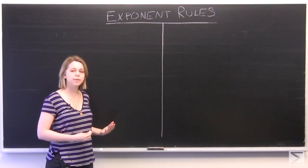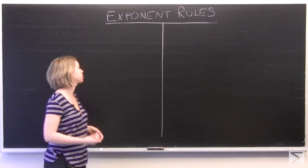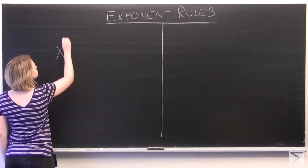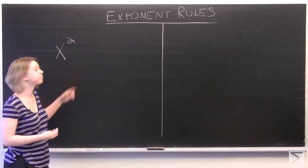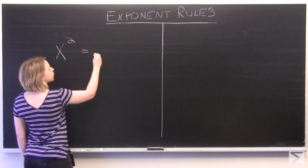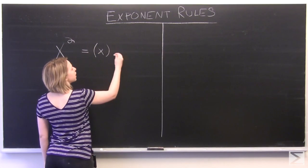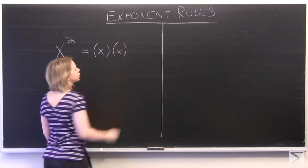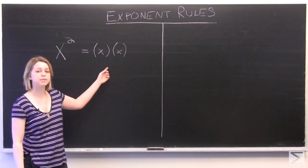So first, let's start off by defining what an exponent does. So if we have our x taken to the second power, what this really means is that we're multiplying x by itself, so that we have two iterations of x being multiplied together.